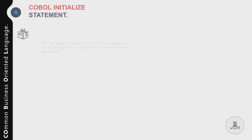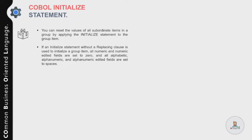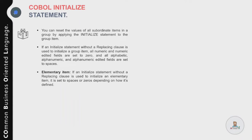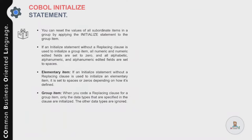Now let's talk about the INITIALIZE statement in COBOL. Introduced with COBOL 85, the INITIALIZE statement can set the initial values of fields and reset values of all subordinate items in a group. The simplest way to use it is without the REPLACING clause on a group item — all numeric fields in the group are set to zero and all alphabetic and alphanumeric fields are set to spaces. If you code the REPLACING clause, you specify which type of field to change and what to initialize it with.